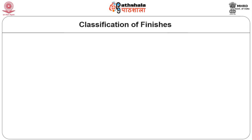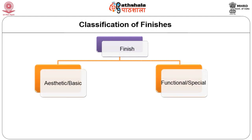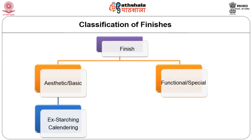Textile finishes can be classified in a number of ways. Based on function, finishes are categorized as aesthetic finishes and functional finishes, also called basic or special finishes respectively. Aesthetic finishes alter the appearance and hand or feel of fabrics. For example, a thin fabric may be starched to increase its weight and shine; calendaring gives a neat look; a dull gray fabric is bleached to get a bright white color — all these are aesthetic finishes.